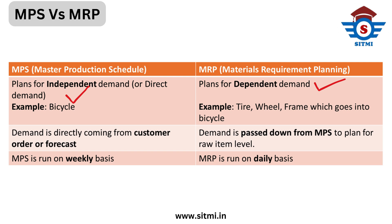In MPS, demand planning data is considered — that means demand is directly coming from customer requirements or from forecast requirements. However, in MRP, demand is passed down from MPS, meaning the output of MPS is taken by MRP for further execution.